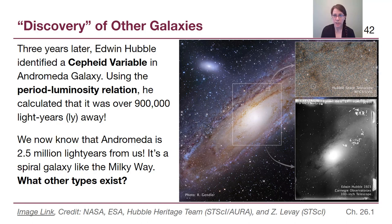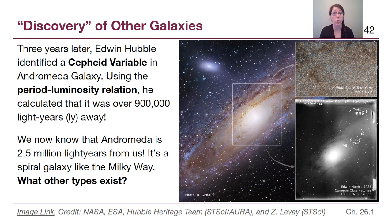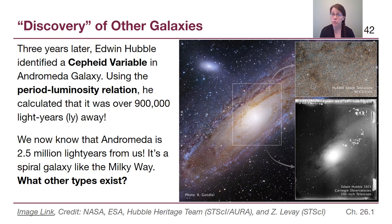Hubble's calculation using the Cepheid period-luminosity relation was that the Andromeda Nebula was 900,000 light years away from us. That was enough in 1923 for everyone to agree that this was not in our own galaxy. We now know that Andromeda is actually 2.5 million light years away. It is a spiral galaxy very similar to the Milky Way and one of the closest large galaxies to us. Now that we know other galaxies exist, we want to understand what types are out there and which are common or uncommon.